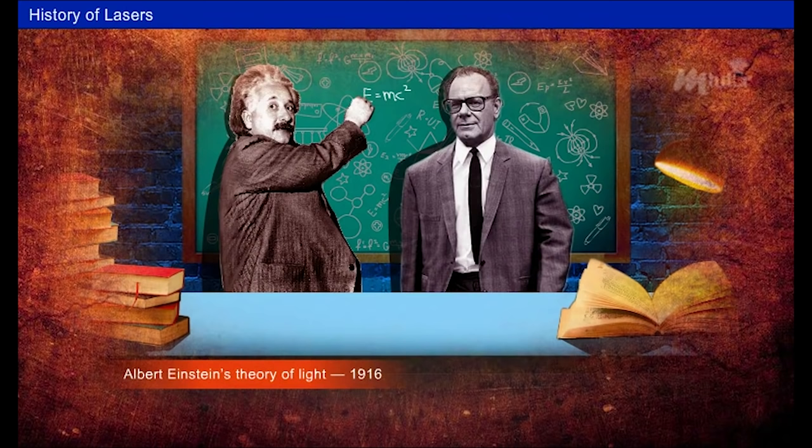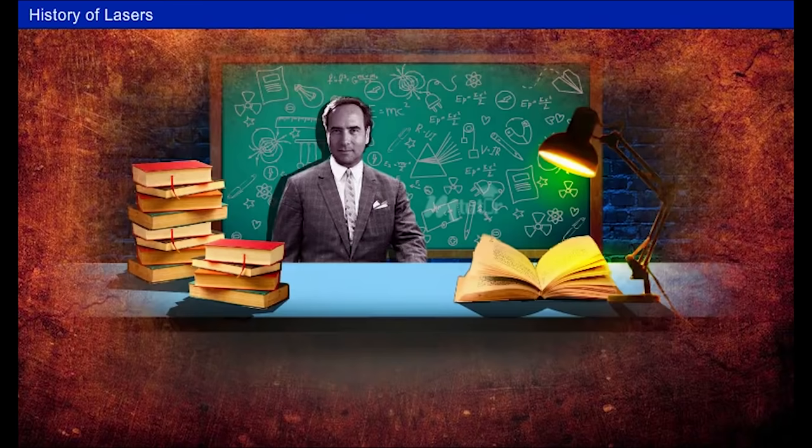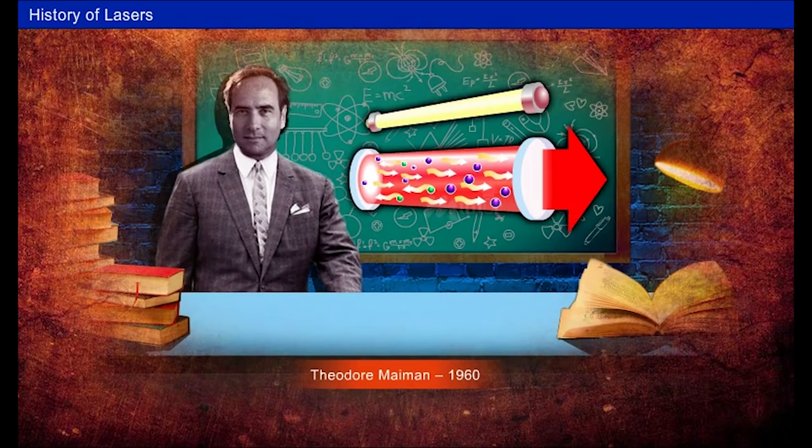This was later developed by Gordon Gould in 1957. In 1960, Theodore Maiman invented the first working ruby laser, which was also the first optical laser.